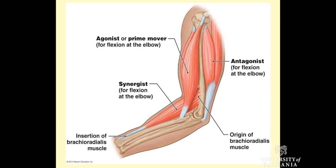Using the upper limbs as an example: for flexion at the elbow, the agonist or prime mover is the biceps brachii, while its antagonist is the triceps brachii. If we reverse and talk about extension at the elbow — straightening the arm — then the agonist becomes the triceps brachii and the antagonist becomes the biceps brachii. The synergist here is the brachioradialis muscle, which helps fix, control, and coordinate those movements, particularly for flexion at the elbow.